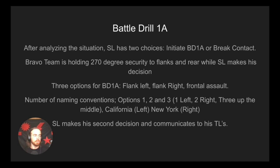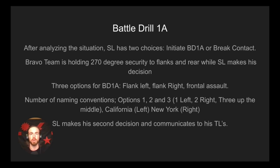For Battle Drill One Alpha you have three options: flank left, flank right, or frontal assault. Naming conventions vary by unit — options one, two, and three; one being left, two right, three up the middle. Some units use 'California left, New York right.' This is all pre-rehearsed — the entire squad knows option one, option two, option three, so the squad leader only has to say 'option two' and the flanking team knows exactly where they're going.